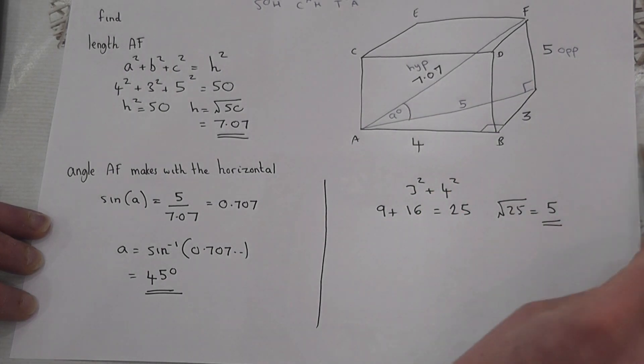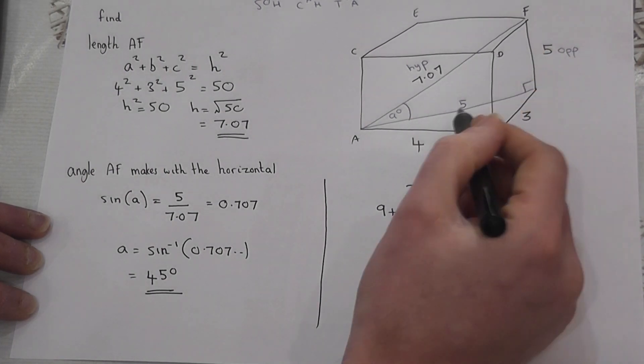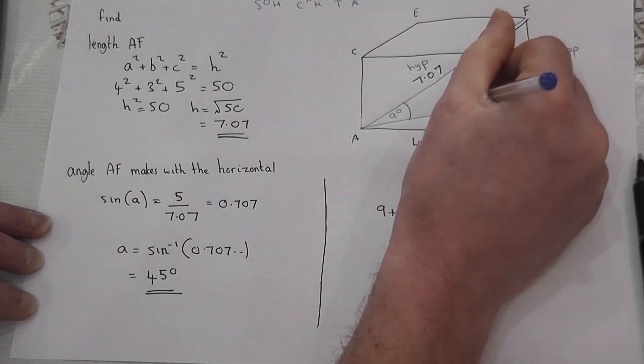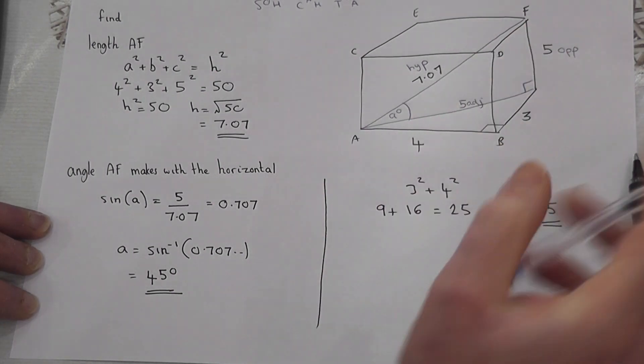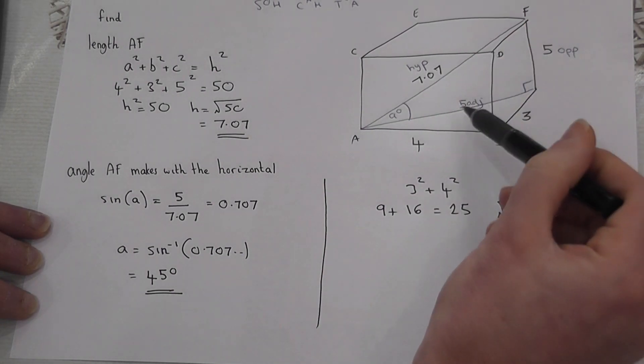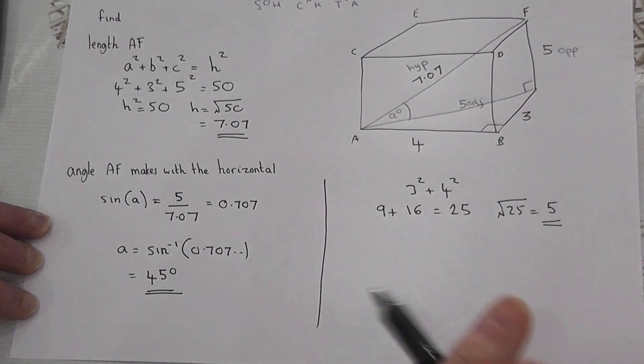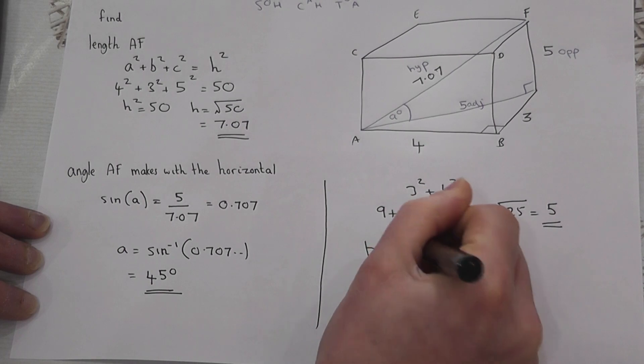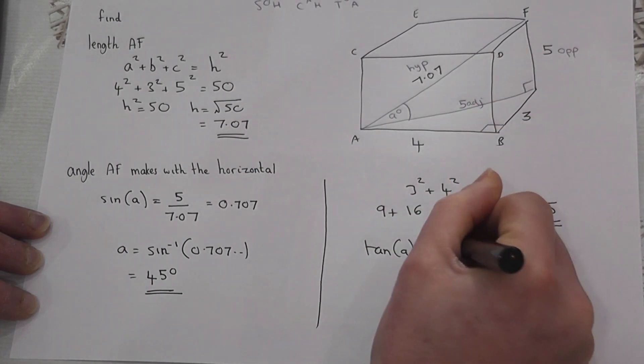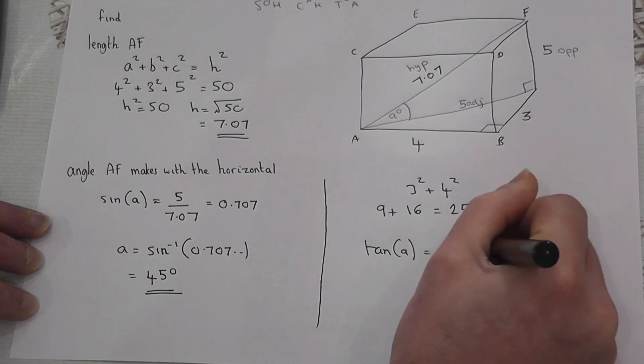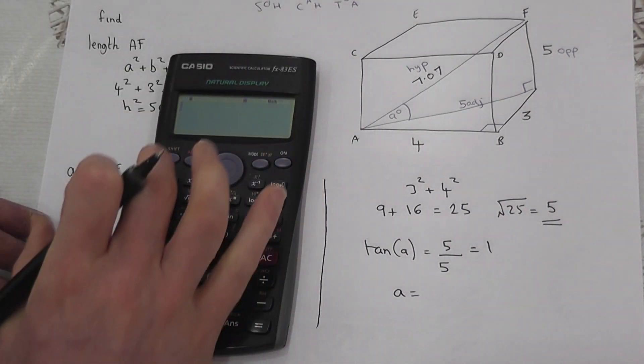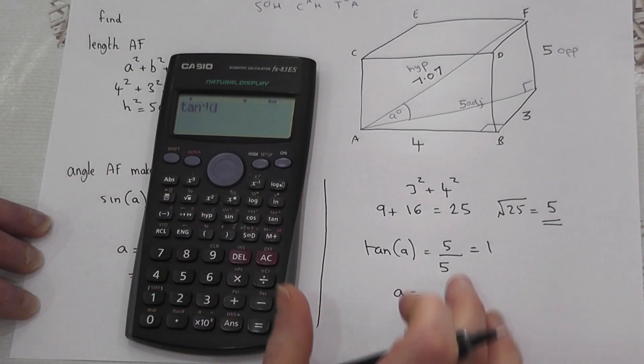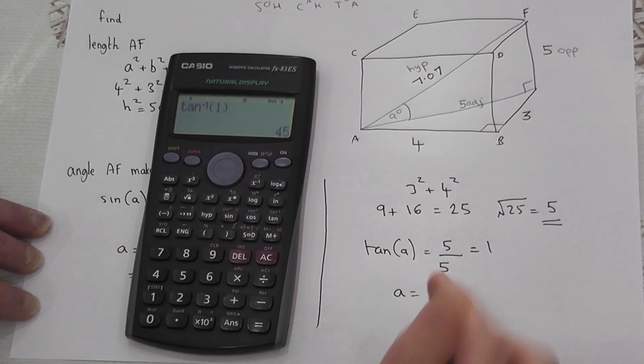But to show the other method: that's opposite to the angle and this is the adjacent. Opposite and adjacent is tan. So tan of the angle equals the opposite over the adjacent, and that just equals 1. So to find the angle, I just do shift tan of 1, and that also gives me 45 degrees.